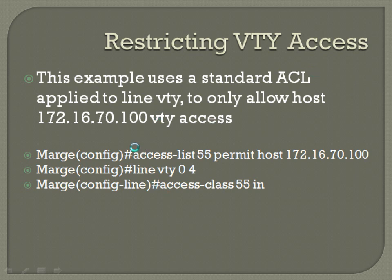The access list itself is going to be a single line because you're going to deny everything except this IP: access-list 55 permit host 172.16.70.100. It's going to be applied to only the VTY interface — line VTY 0 4.